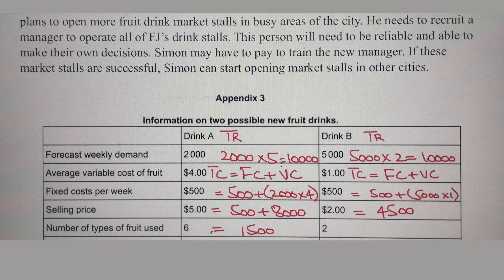The question doesn't explicitly require accounting ratios or break-even, but it is always recommended to get higher marks. Now let's calculate for Drink A. Forecast weekly demand is 2,000 and selling price is $5, so total revenue = 2,000 × $5 = $10,000. To find profit, total cost = fixed cost + variable cost. Fixed cost is $500 and variable cost per unit is $4, so 2,000 × $4 = $8,000 variable cost.